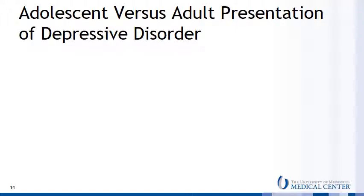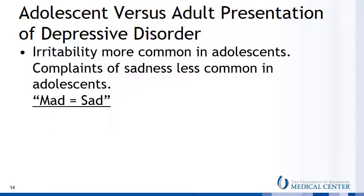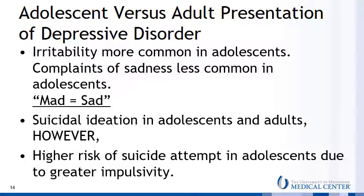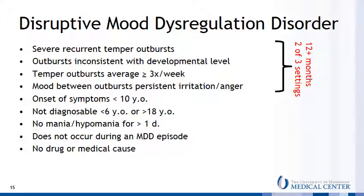Although the first episodes of major depressive disorder often occur in childhood, especially adolescence, child and adolescent depression often looks a bit different than in adults. In particular, irritability is more common than complaints of sadness, leading to the mnemonic 'mad equals sad.' Although the rate of suicidal ideation among adolescents is similar to that of adults, adolescents are at much higher risk of attempting suicide due to their greater impulsivity. The DSM-5 introduced a new diagnosis — disruptive mood dysregulation disorder — among children and adolescents to account for this difference in behavioral expression and to aid in differentiating true MDD.